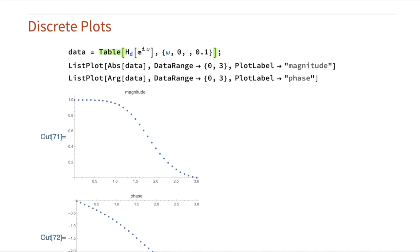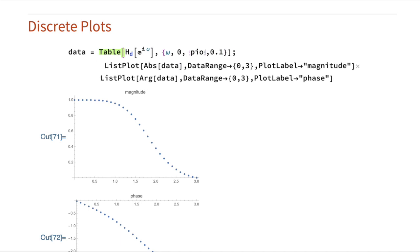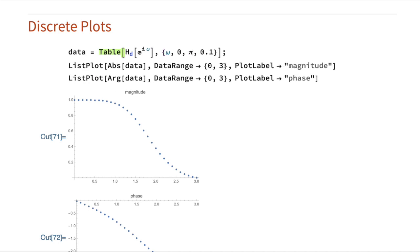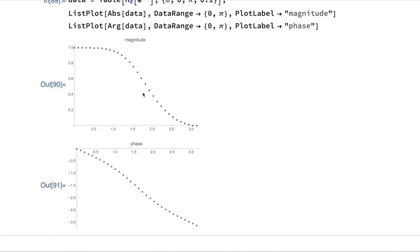Since I'm doing this as a digital filter, it'd be nice to have this be pi actually. The Nyquist frequency of a digital filter is always pi radians, so I'll recompute. I create this table of values and again take the absolute value and the complex argument, and that gives me magnitude and phase.